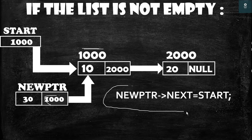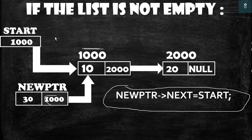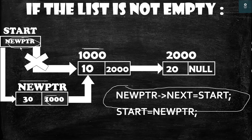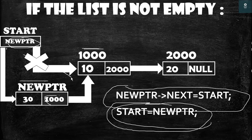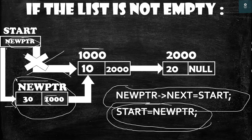You can see newptr->next is equal to start, because start is having the value 1000 — the address of the first node — so newptr is now pointing to the initial first node. After this we make start point to newptr: start is equal to newptr. As soon as we execute this line, the old link is broken and start is now pointing to newptr. In this way our node is added to the beginning of the linked list.